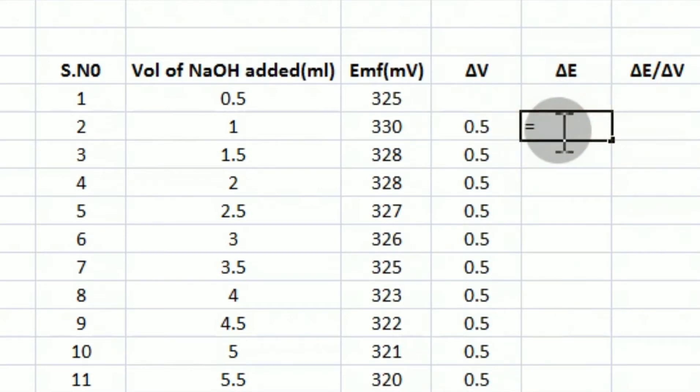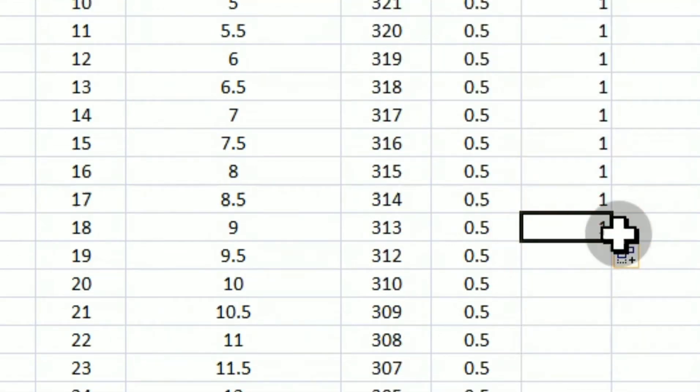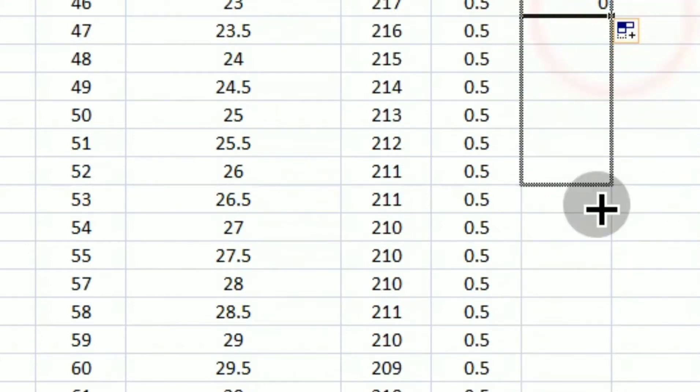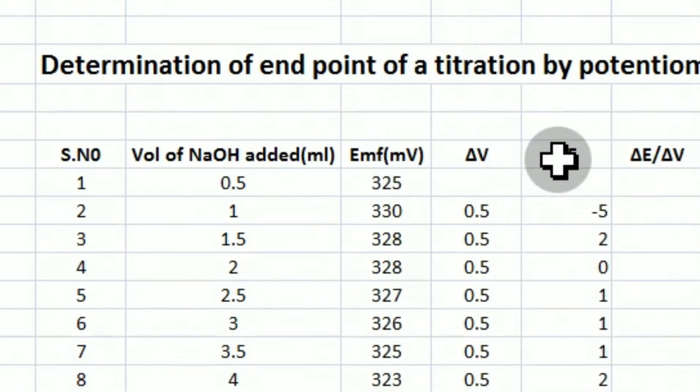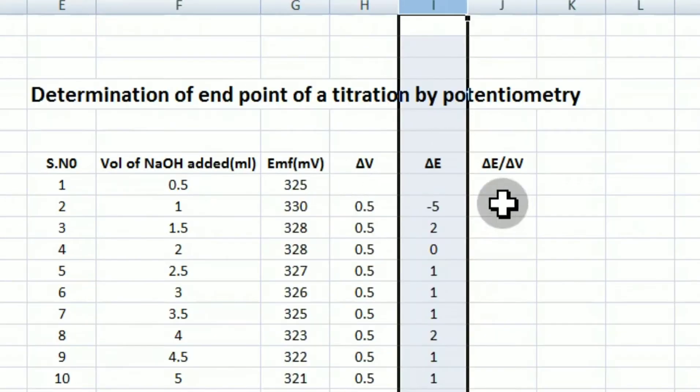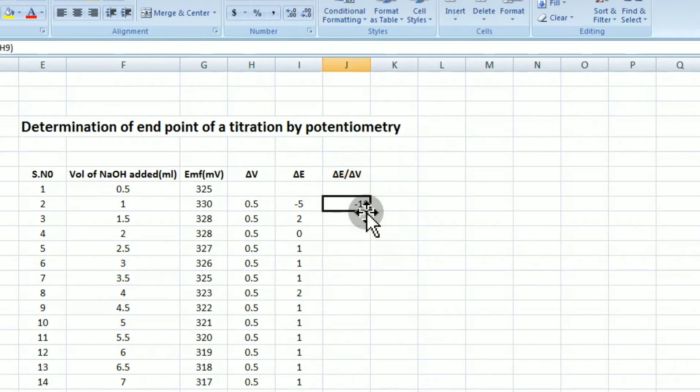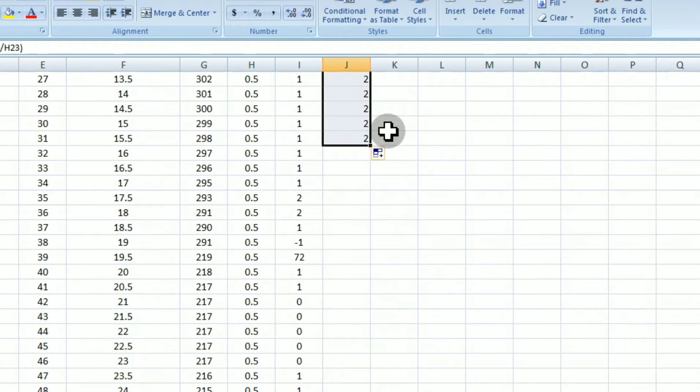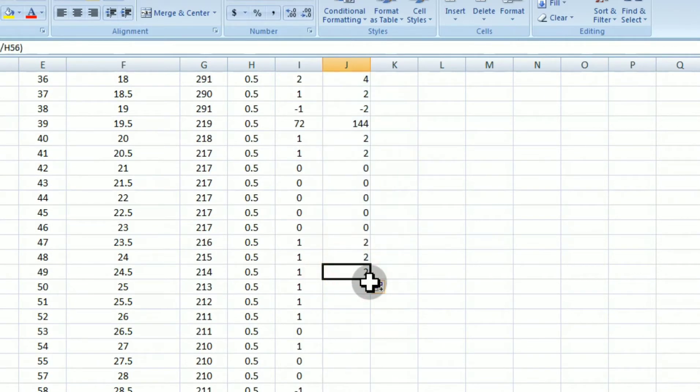And also you have to calculate the delta E values. That is the difference in the potentials, difference in successive potentials. And these values can be simply obtained by applying the Excel formulas. And next you have to calculate the delta E by delta V values. So like this, you have calculated all the required values like delta V, delta E and delta E by delta V.